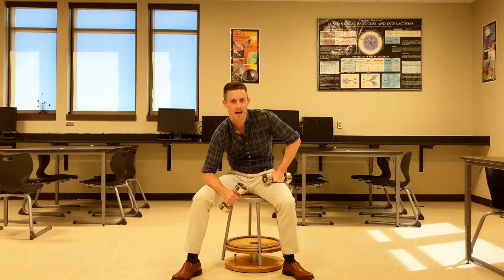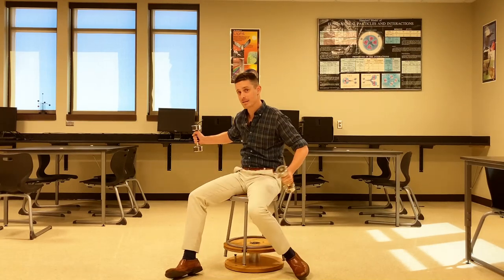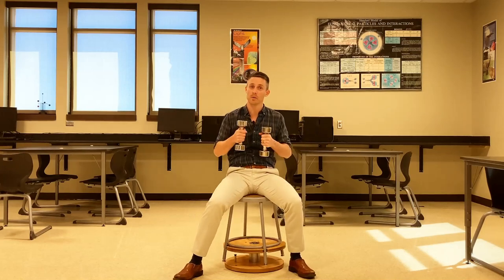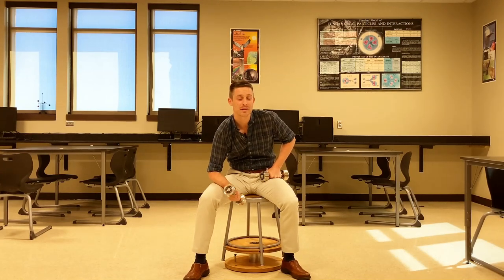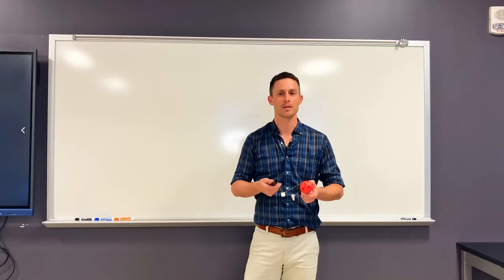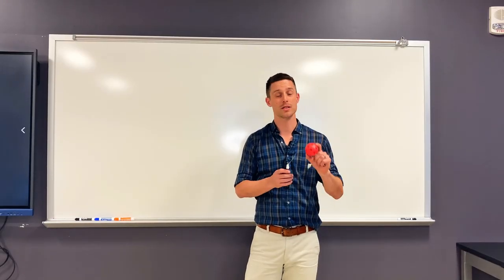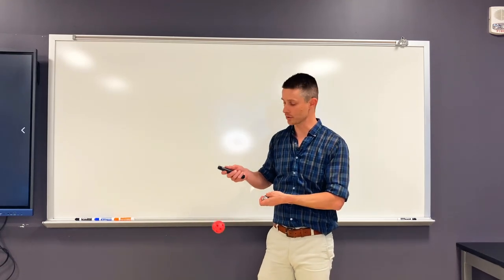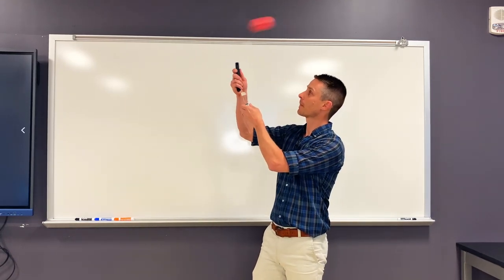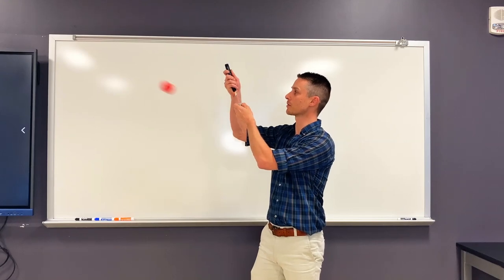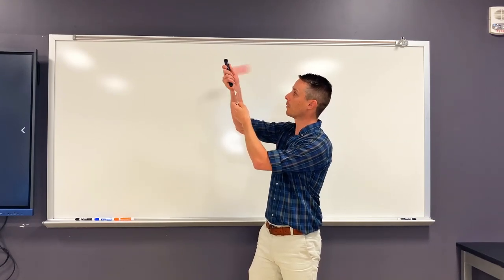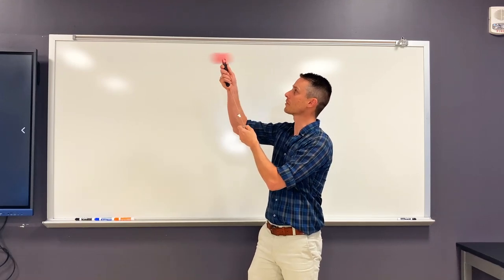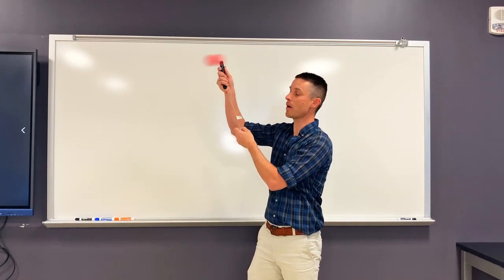Something incredibly unexpected happens here. The masses, as I'm spinning and pull them inward, don't keep moving at a constant speed — they actually speed up. Now, to simplify what's happening here, let's recreate this demo with just a single spinning mass. This is a ball connected by a string that runs through a tube. And I can spin this ball in a horizontal circle, no different than the masses when sitting in the chair. But when I pull on the string, I make the circle that the mass is spinning in smaller.